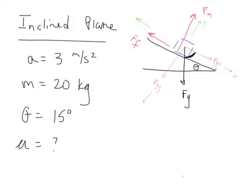If fp were at an angle itself, you'd break it into its x and y components — but on inclined planes I won't give you that. You wouldn't use 90 minus theta in that case; you'd use the angle given in the problem, say theta two, with cosine theta and sine theta. So that's the answer: if fp was at an angle, it'd be a different theta and you'd use standard cosine and sine for its components.